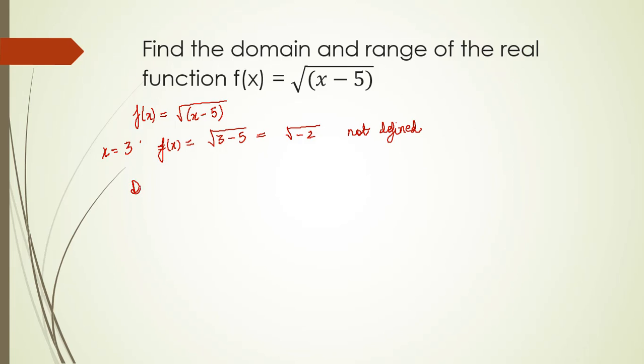So the domain will be all the values greater than 5. This can be written as 5 up till infinity. If x equals 5 then f(x) will be equal to 0 and it is still valid. So we will take the value of input as 5.